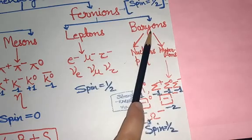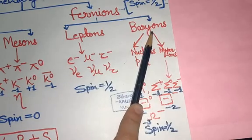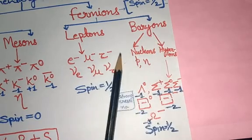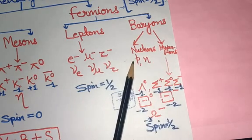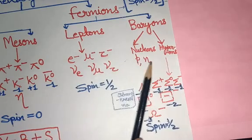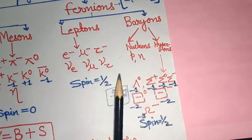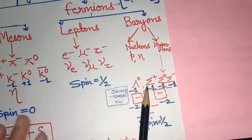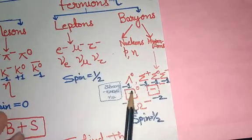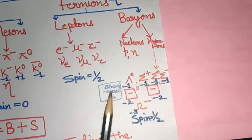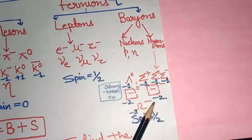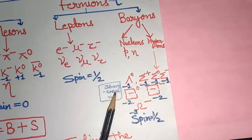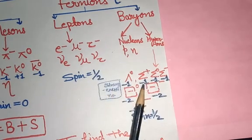The second category of fermions is baryons, which include nucleons and hyperons. As you know, the particles in the nucleus of an atom are proton and neutron. The hyperons are lambda, sigma, xi, and omega. These are all hyperons, and they are also strange particles, meaning a strangeness number exists for them.